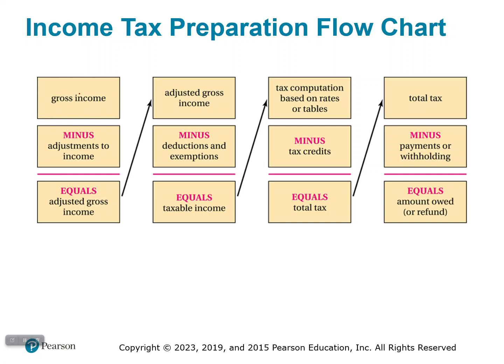So we start with gross income. Gross is just all the money you made. Now we'll subtract some adjustments to the income. So the gross income, after we subtract adjustments, is called the adjusted gross income.